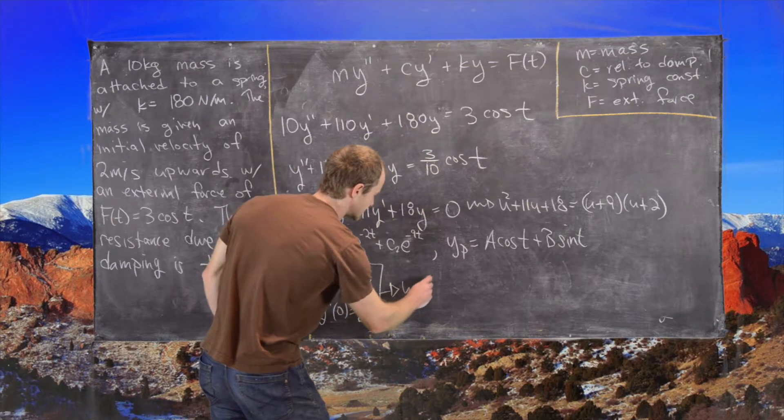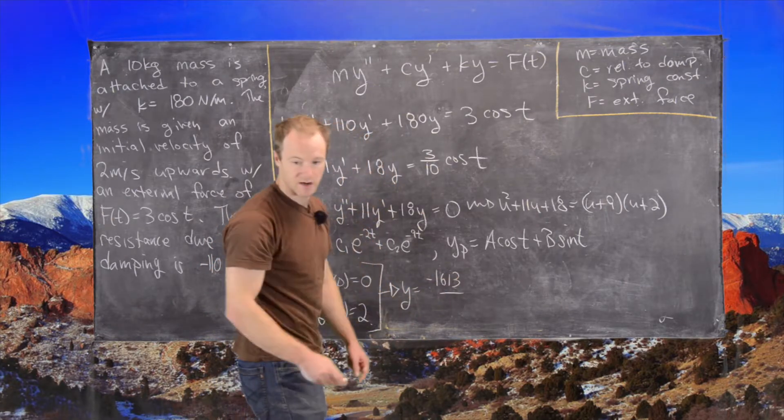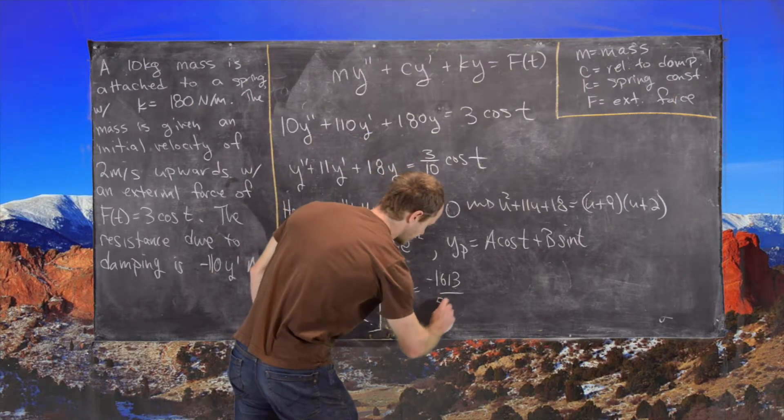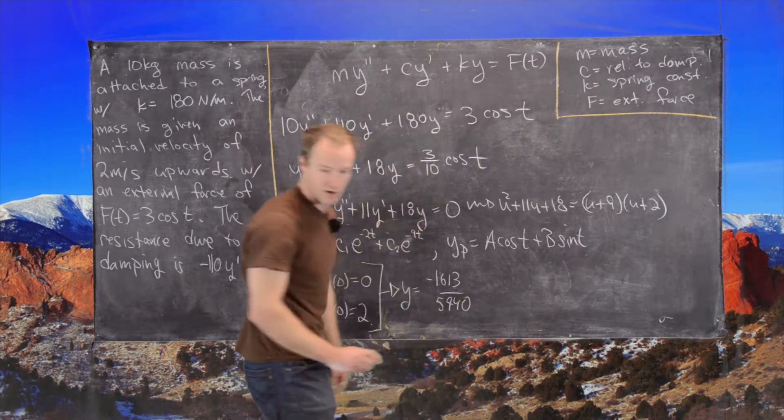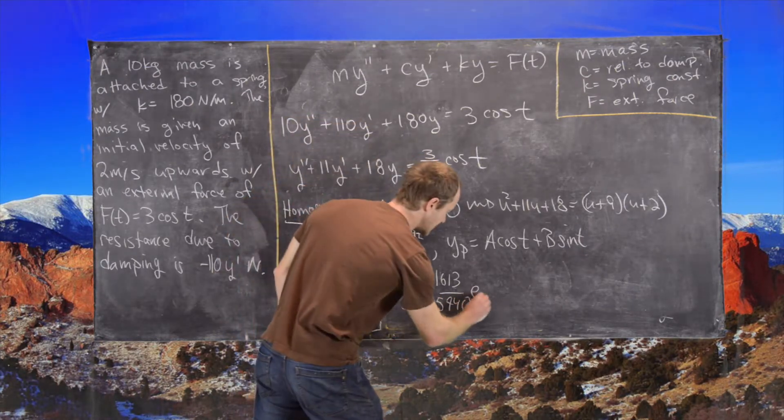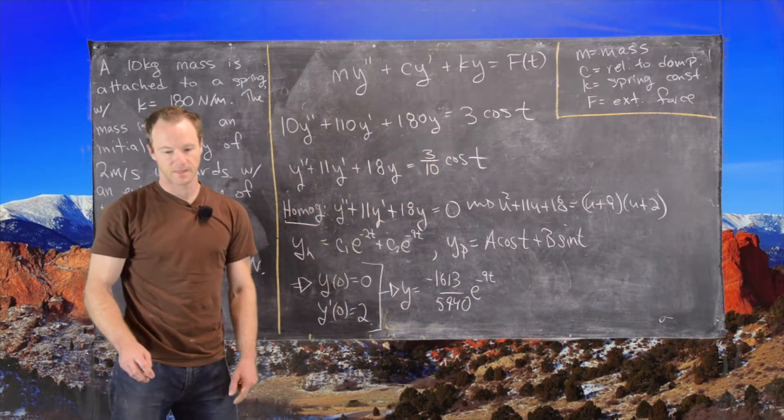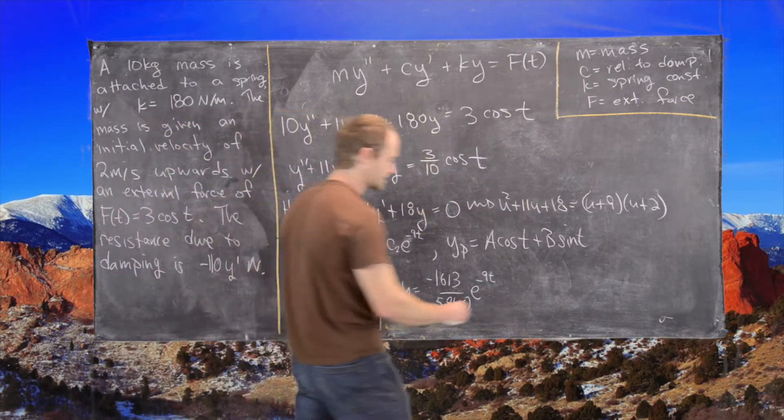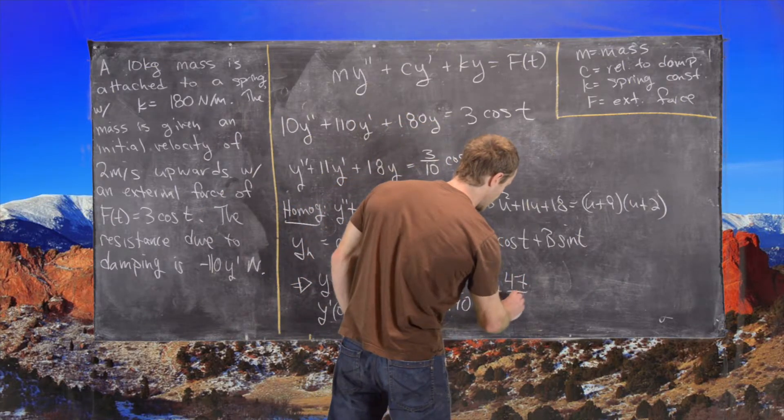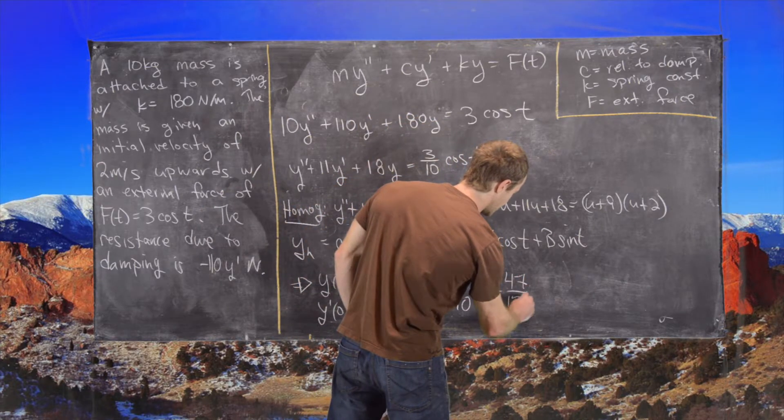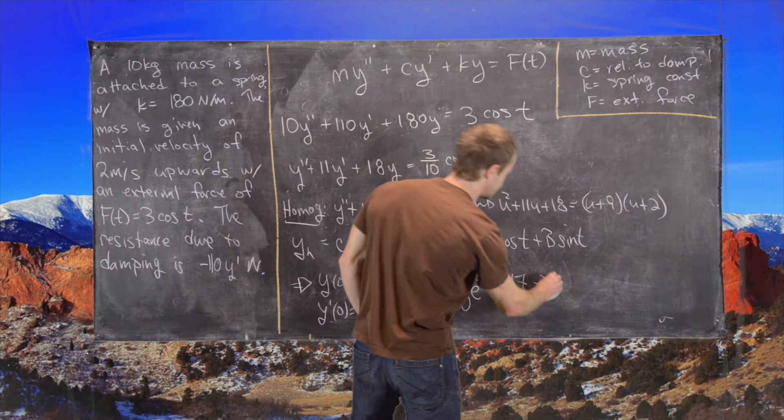y equals negative 1613 over 5740 and that will be e to the minus 9t. And then plus 47 over 175 and that will be e to the minus 2t.